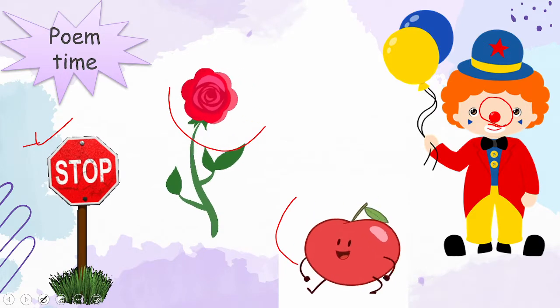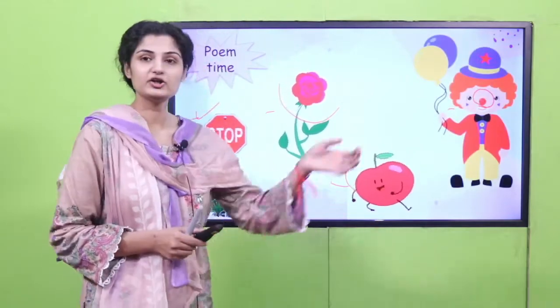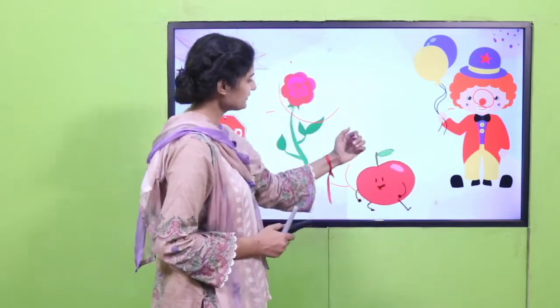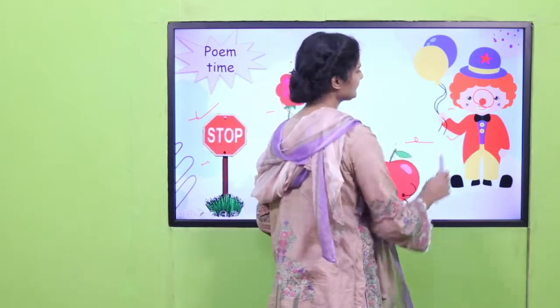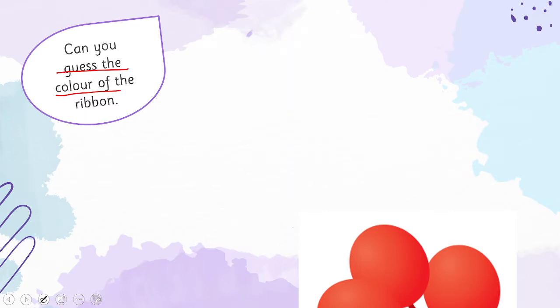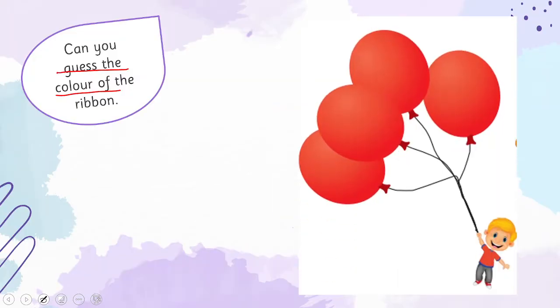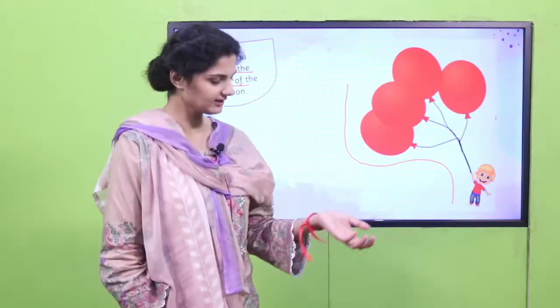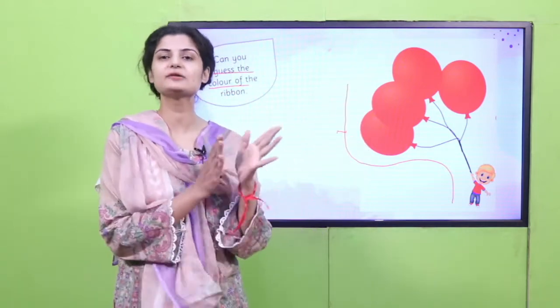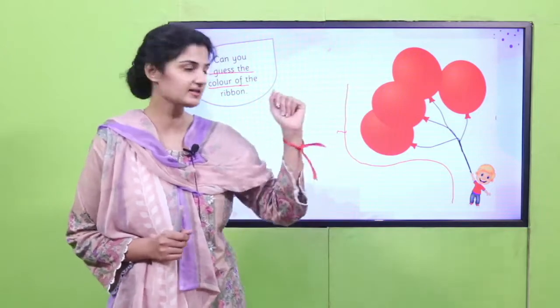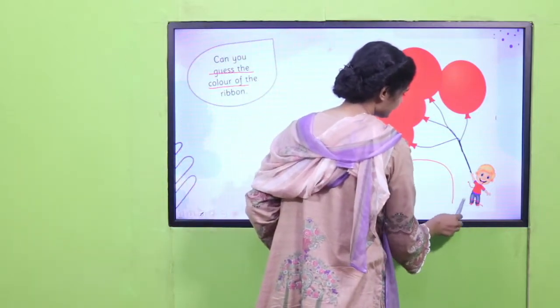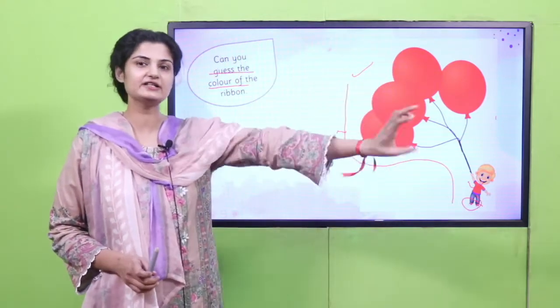Can you guess the color of the ribbon? Aapne note ki? All four of these pictures have one common thing — which is the color. The color of the day we are discussing, and the color of the ribbon as well. Red stop sign, red rose, red apple, and red nose — and the red coat as well. The color of the ribbon and this picture from your book are having the same color. Which color is this? This is a red color. Excellent playgroup, you have guessed it right! Red balloon, red shirt, red shoes, and red ribbon. Wiggle it one more time — red ribbon!